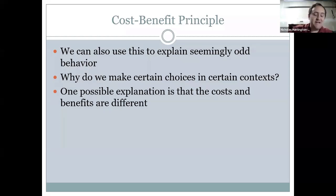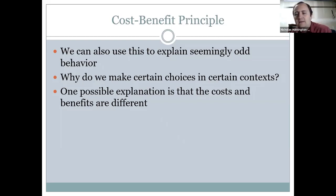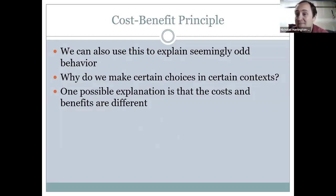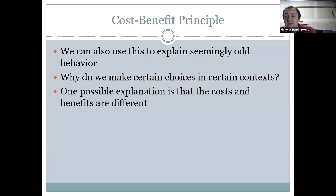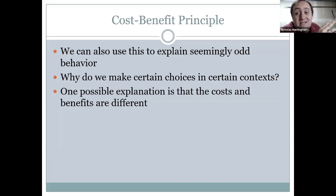That's a pretty straightforward example, but we can use this logic to explain seemingly odd behavior. People make the same choice differently based on context — a choice that makes sense in one situation may not make sense in another. Certain things are outlawed in some countries and not others, or subsidized in some places and not others. An economist would ask: how are the incentives different? If something is banned in one country and not another, the incentives for whoever is making that decision are probably different.